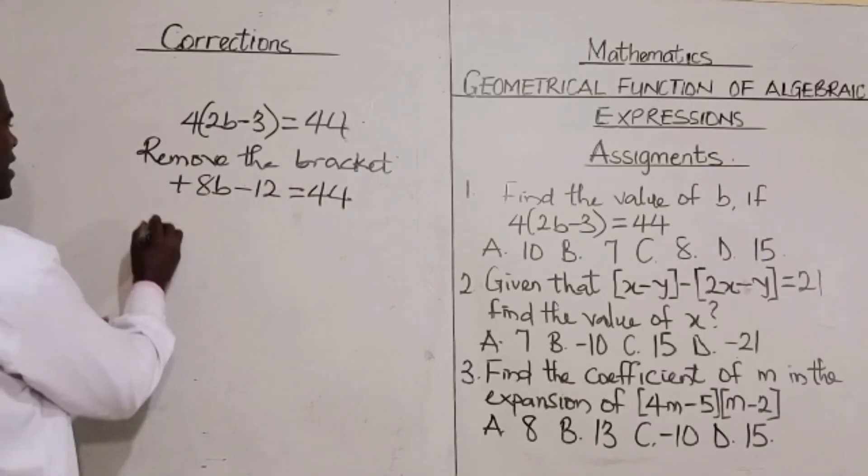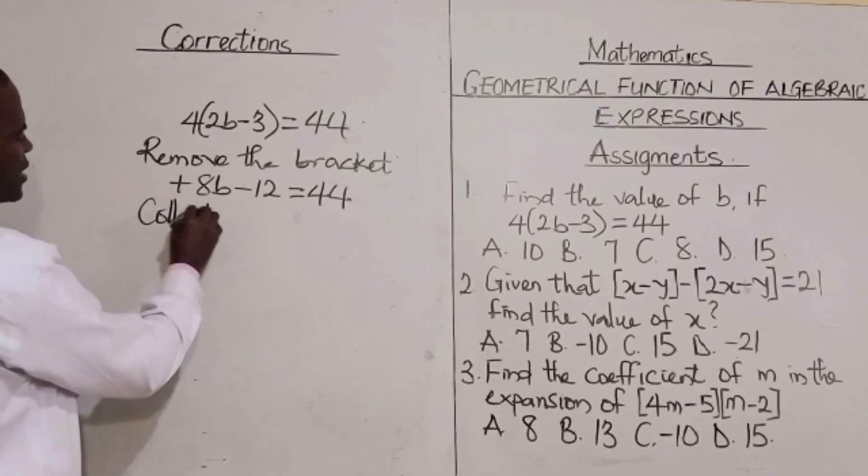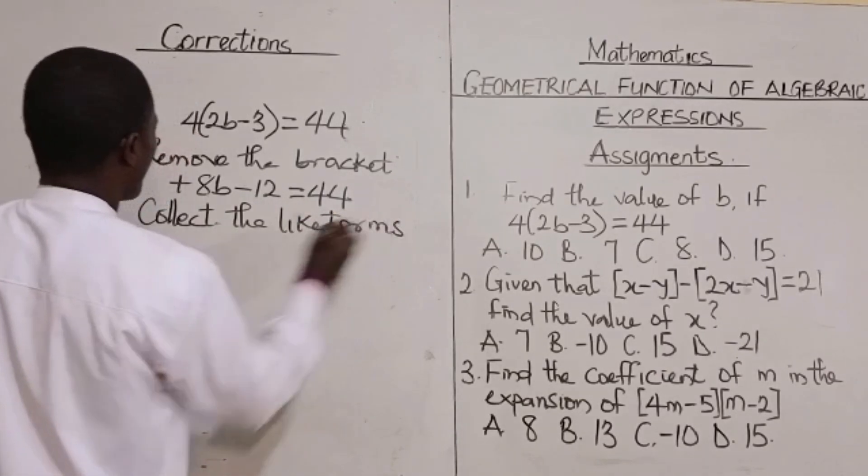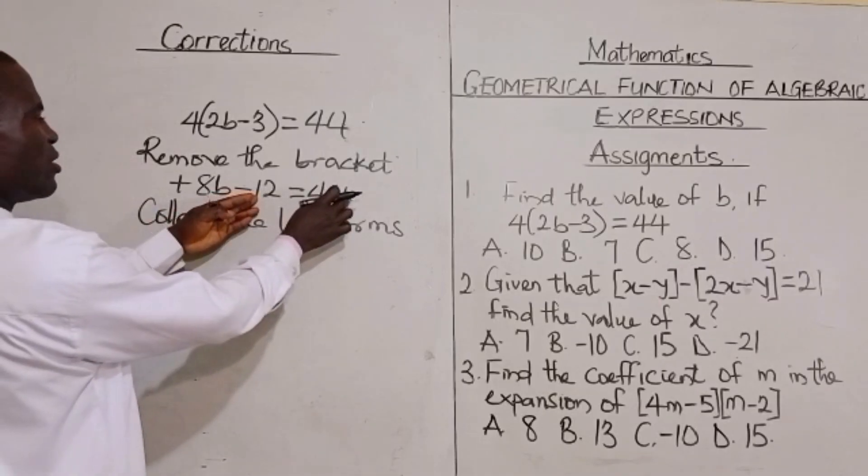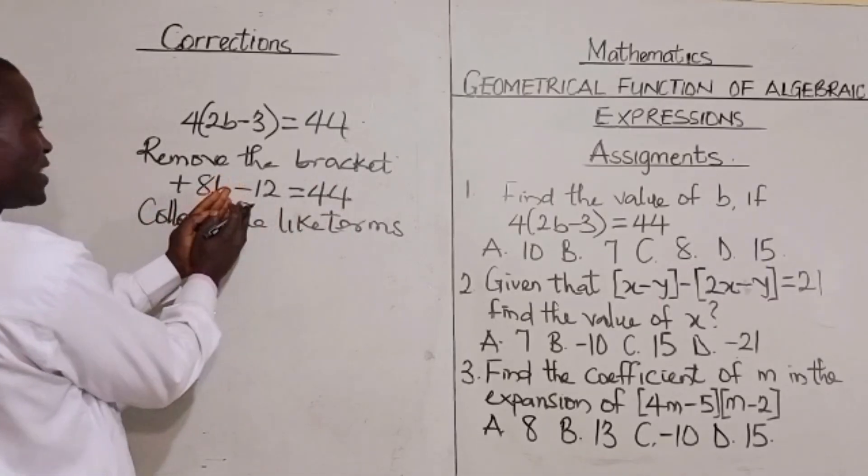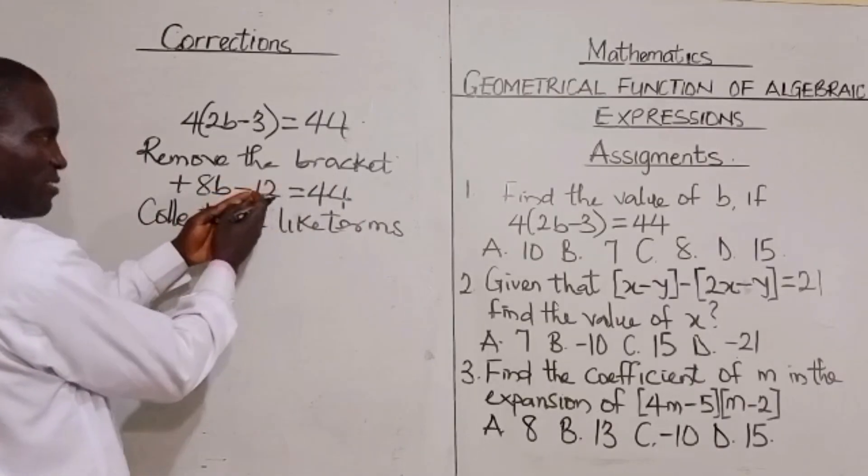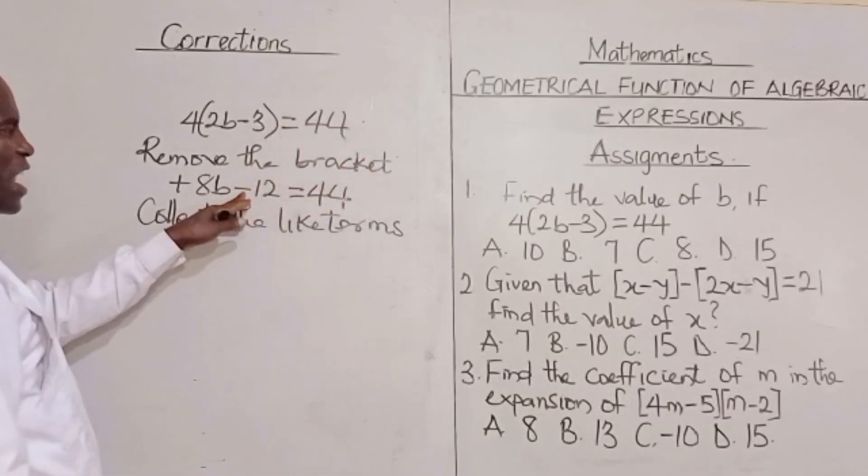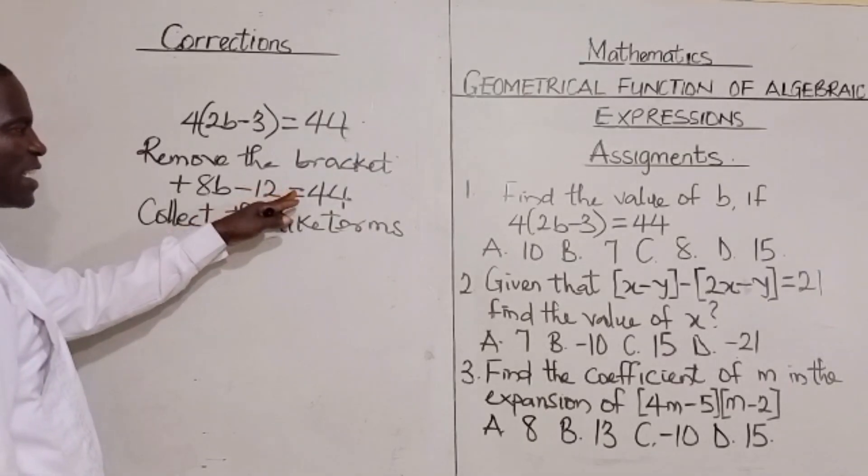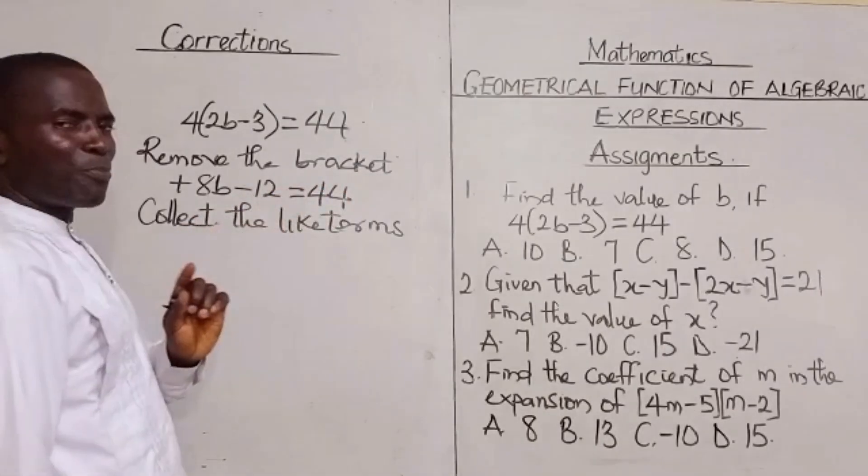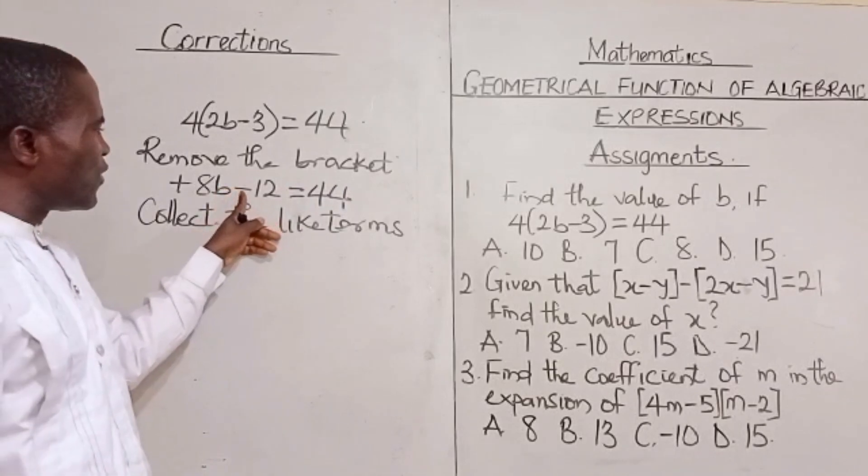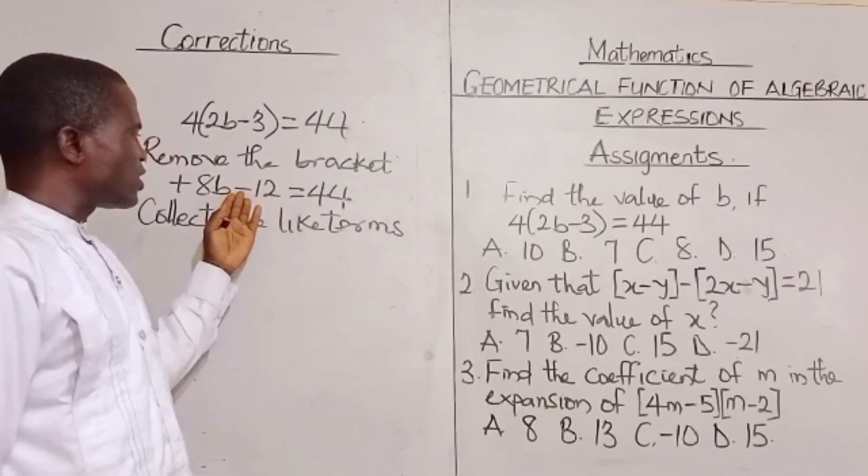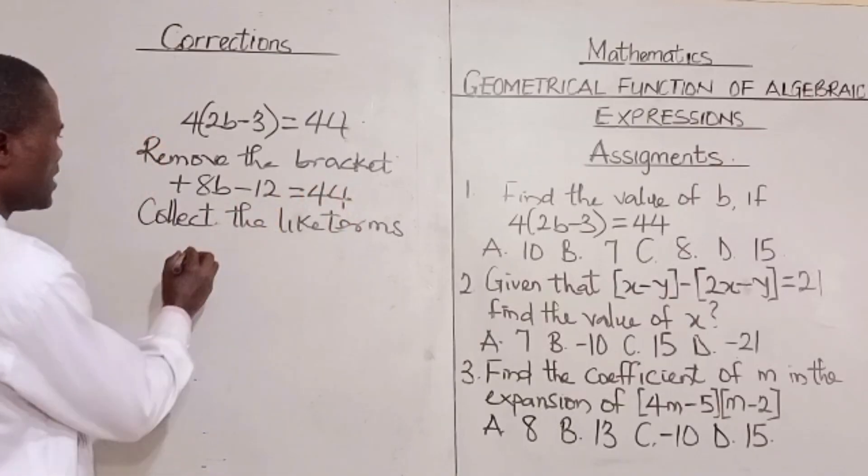Then we collect the like terms. Now here is minus 12 and here is plus 44. For us to collect the like terms, these and these are the same terms. So this one we have to go and meet this, but as it's going, this negative sign crosses over the equality sign. It changes to plus because the principle is that whenever a negative sign crosses over the equality sign, it must change to positive. And if it is positive, when it crosses over the equality sign, it must change to negative.